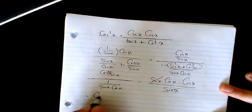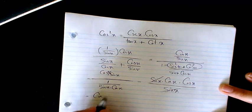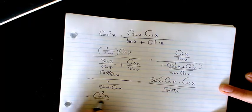Sine x and sine x cancel out and we will have cosine x times cosine x which is cosine squared x.